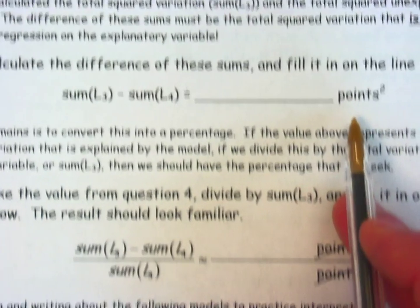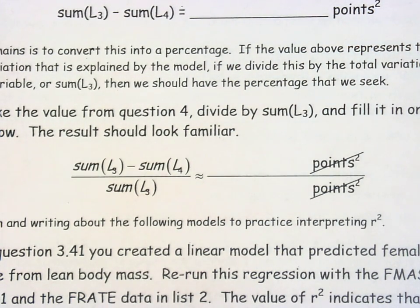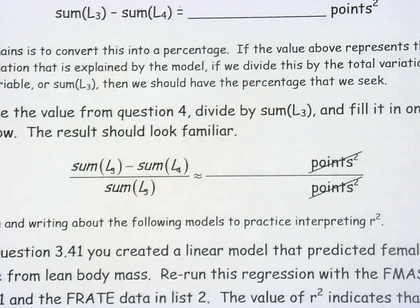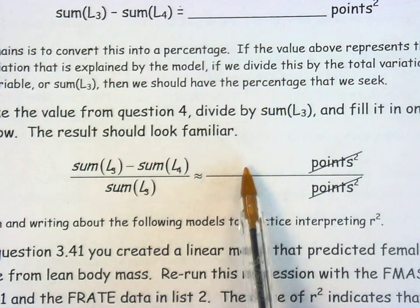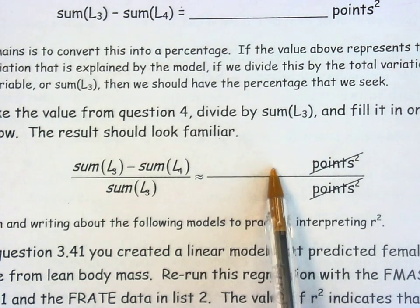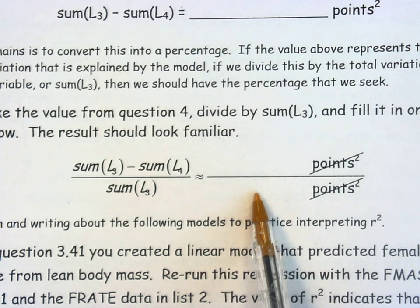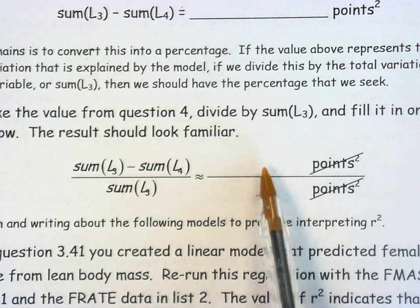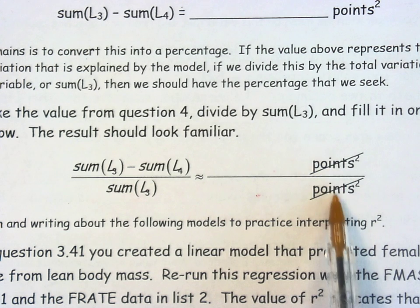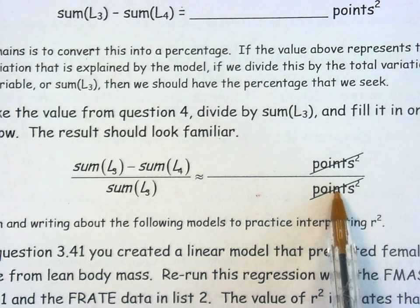And then to turn this into a percentage, all we have left to do is to compare the result of step number two, where we calculated the total variability with the result of step four. Step four gives us the amount of variability that is explained by the model. Step two gave us the total amount of variability. If you make that fraction, notice the squared points will cancel. You can divide it out and you should get a percentage that looks pretty familiar.